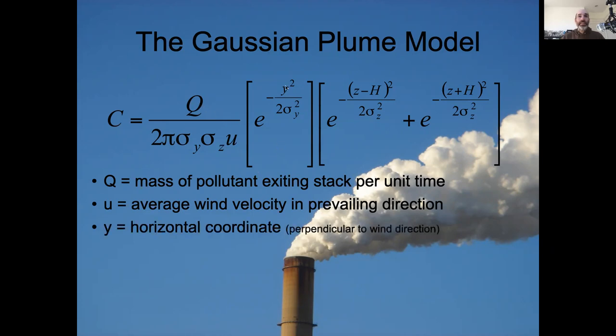Next, we see this first set of square brackets, the second term e to the y squared over 2 sigma y squared. And here, this looks just like what we saw in the diffusion model. So we're seeing things diffusing out laterally according to a Gaussian model, and where y is that lateral distance relative to the wind speed.